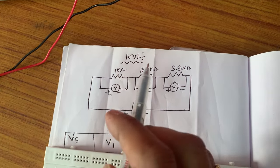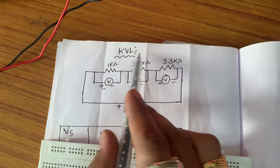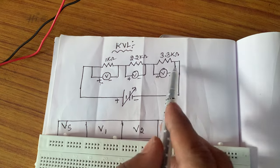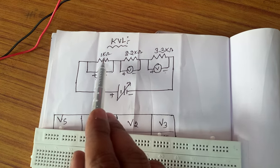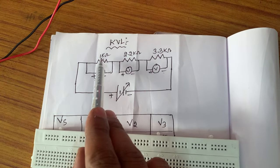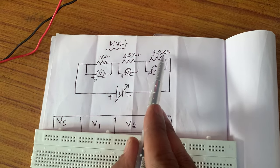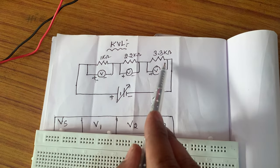Hello everyone, today we are going to conduct the Kirchhoff's Voltage Law KVL experiment. This is a circuit diagram of Kirchhoff's Voltage Law. This circuit consists of three resistors: 1 kOhm, 2.2 kOhm, and 3.3 kOhm resistors connected in series.